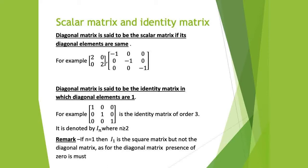For example, I have taken these two matrices. In the first matrix, the diagonal elements on the principal diagonal are 2, 2, 2 — both elements are equal to 2. Next is the matrix of order 3×3 in which the principal diagonal elements are −1. In these two matrices, the principal diagonal elements are the same, so these two matrices are called scalar matrices.